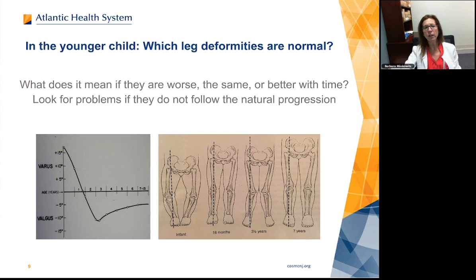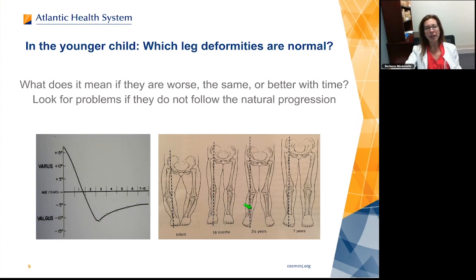In the younger child, which leg deformities are normal? When a child is born, they are the most bow-legged they're ever going to be. Over time, by about 18 months, that bowing should disappear. They can then enter a knock knee phase, which may be worst at about three and a half years of age. By the time they're seven or eight, the knock knee should be resolved, or so little left that it doesn't matter.